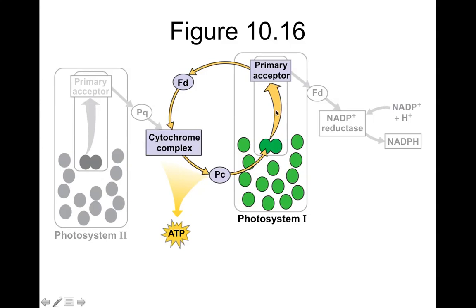In cyclic electron flow we have photosystem one with P700, and the electrons can be accepted by a primary acceptor. They are transferred to ferredoxin, just like in linear electron flow — that's the grayed out portion here. Ferredoxin can dump those electrons into the cytochrome complex, where they can produce ATP through ATP synthase. The electrons get passed on to plastocyanin and cycled back to P700 with another photon of 700 nanometers.